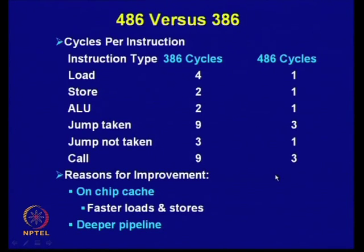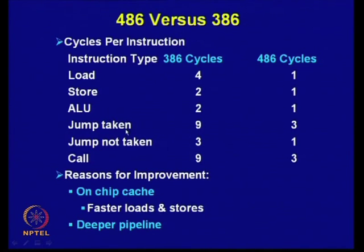You can see the number of clock cycles required for different operations in the 386 vs. 486: a load instruction requires 4 cycles in the 386, but only 1 cycle in the 486. Store also requires 4 cycles in the 386 and only 1 in the 486. ALU operations require 2 cycles in the 386 and only 1 in the 486. Jump instructions (when taken) require 9 cycles in the 386 and 3 cycles in the 486. When jump is not taken, the 386 requires 3 cycles and the 486 only 1 cycle.